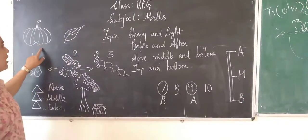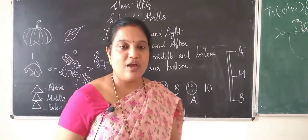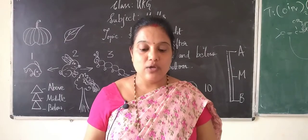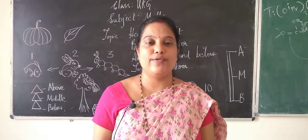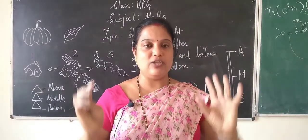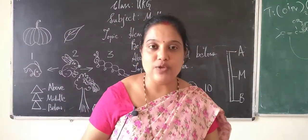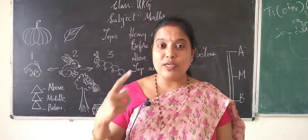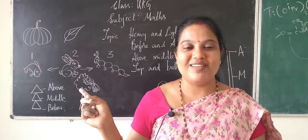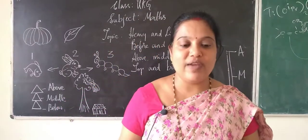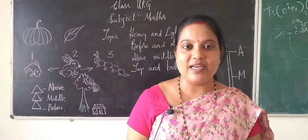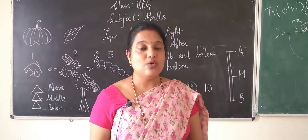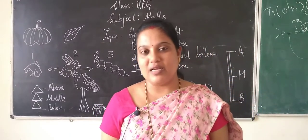Pumpkin is heavy and leaf is light. Now, have you seen your school desk or bench? The bench is heavier than the pumpkin — you can't hold it in one hand at all. With a pumpkin, at least you can use both hands and lift it, but a school bench is very heavy. You can't lift it easily; you need more strength. Based on the weight, you can identify things as heavy and light.